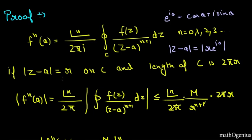So we get mod of z minus a equal to r on a circle C and the length of circle C is 2 pi r because the radius of the circle is r and 2 pi r is the perimeter which is the length of the circle C.